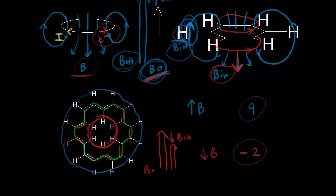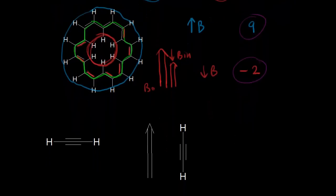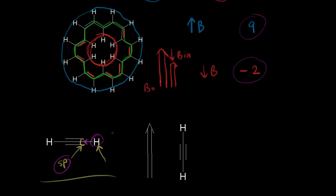Let's use this effect to explain the shift for a proton on a triple bond, thinking about acetylene. The carbon it's attached to is sp hybridized, and we talked about the fact that an sp hybrid orbital has more s character than an sp2 or sp3 hybrid orbital. Therefore, the electron density is going to be closer to that carbon — you can think of an sp hybridized carbon as being more electronegative. This would suggest the proton is deshielded, giving a higher chemical shift than a proton on a double bond. But the shift for this proton turns out to be approximately 2 to 2.5 — actually a lower chemical shift than a proton on a double bond.